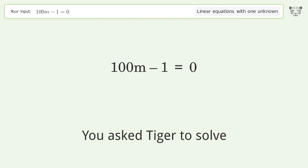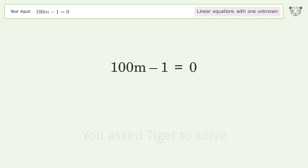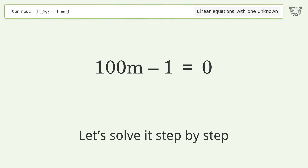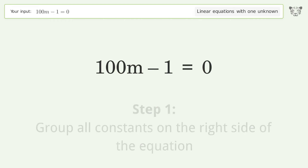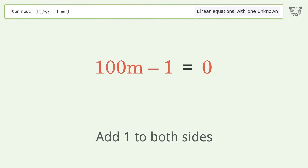Tiger Algebra solves this linear equation with one unknown. The final result is m equals 1 over 100. Let's solve it step by step: group all constants on the right side of the equation, then add 1 to both sides.